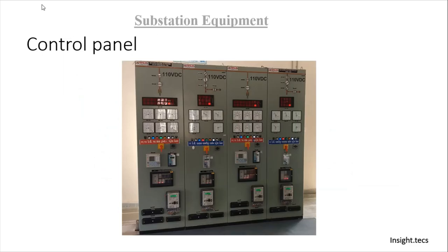This is how a control panel looks like. There are two different types of control panels. The first one is for a transformer or an incomer, and the other one is for the line. Let us understand each component in detail.